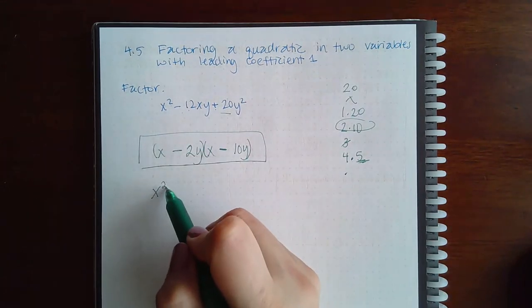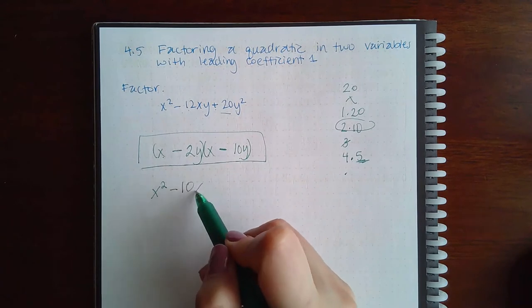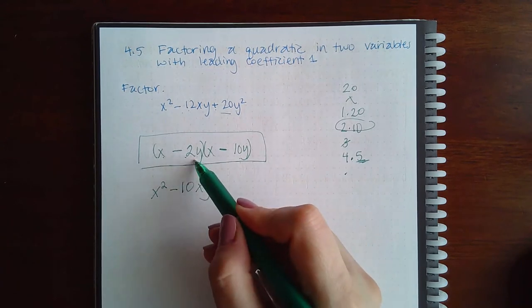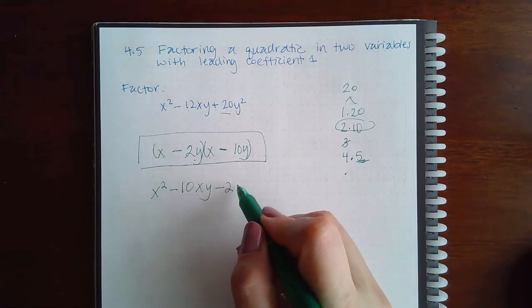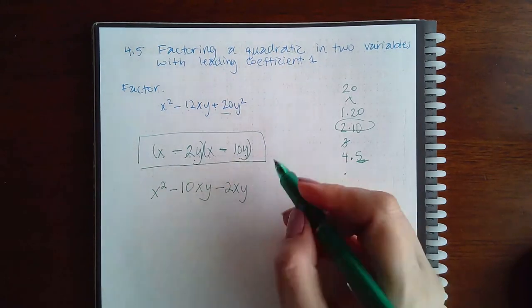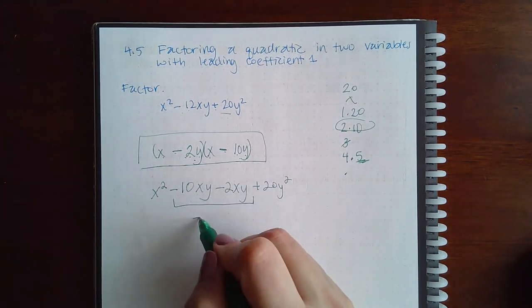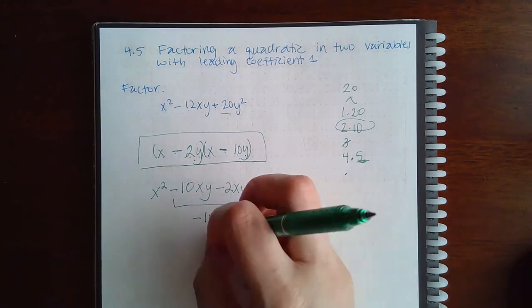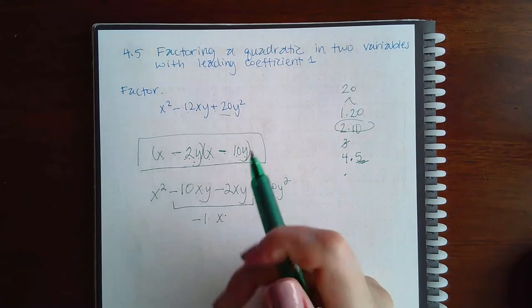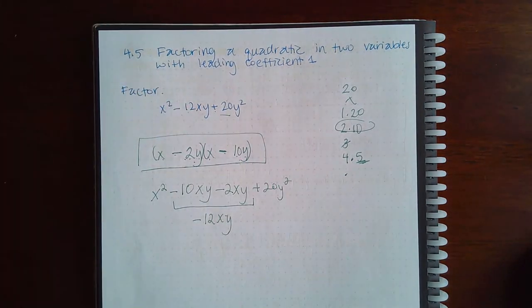x times x is x squared. x times negative 10y is negative 10xy. Negative 2y times x is negative 2xy. And negative 2y times negative 10y is positive 20y squared. And these two terms simplify down to negative 12xy, just like what we had there in the middle.